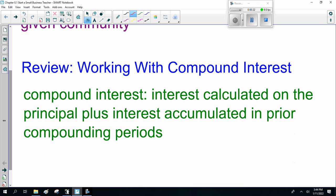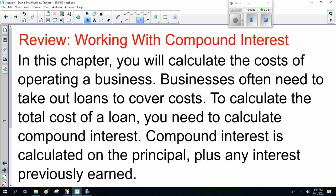We've got to work with compound interest. Compound interest is interest calculated on the principal plus interest accumulated in prior compounding periods, or interest on interest. In this chapter, you will calculate the cost of operating a business. Businesses often need to take out loans to cover costs. To calculate the total cost of a loan, you need to calculate compound interest.